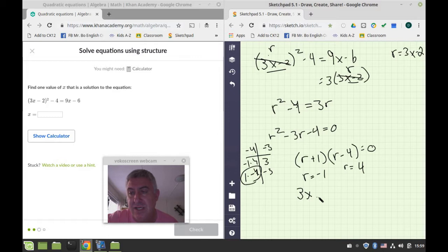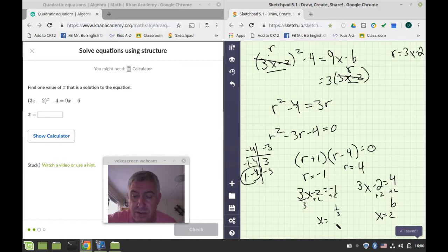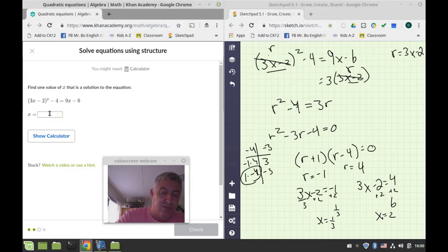r is 3x minus 2, we made up r, there is no r in this problem, we just made up something to replace this piece, so we can use that piece all together, and don't get ourselves confused. 3x minus 2 is equal to negative 1, 3x minus 2 is equal to 4, so I've got plus 2, plus 2 is 6, and then I've got x is equal to 2, and I've got plus 2, plus 2, I have 1 divided by 3, so I have x is equal to 1 third. So my two answers are x is 1 third, or x is equal to 2, so let's find 2.